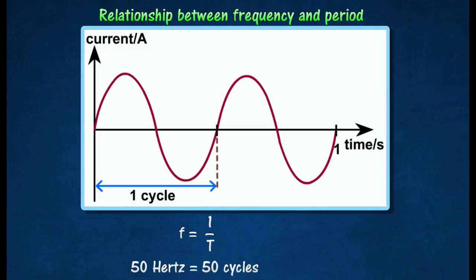For example, in Malaysia, common house electrical supply is at 50 Hertz. This means that the current changes direction 100 times, or 50 cycles, in one second.